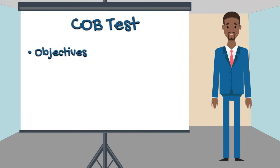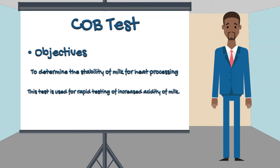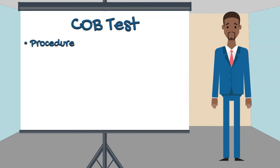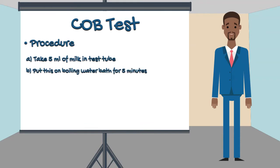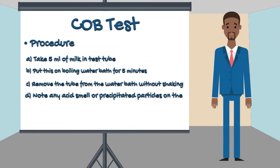The objective of the Clot-on-Boiling test is to determine the stability of milk for heat processing. Procedure: Take 5 ml of milk in a test tube, put it on a boiling water bath for 5 minutes, then remove the tube from the water bath without shaking, and note any acid smell or precipitated particles on the sides of the test tube.